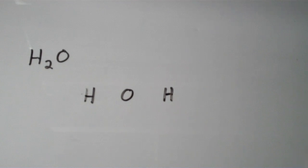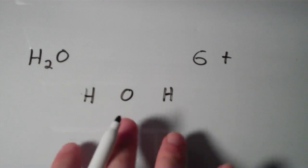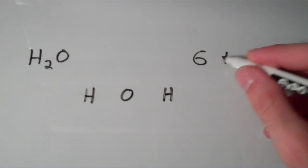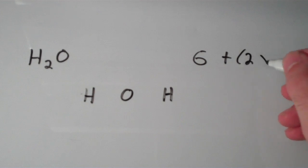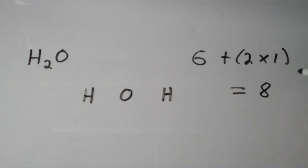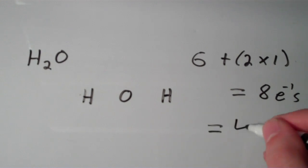The next step is to count up the total number of valence electrons. Oxygen has six valence electrons. Each hydrogen has one valence electron and there are two of them, so six plus the quantity of two times one — that is equal to eight valence electrons. If we divide eight by two, we get the number of electron pairs, which is four.